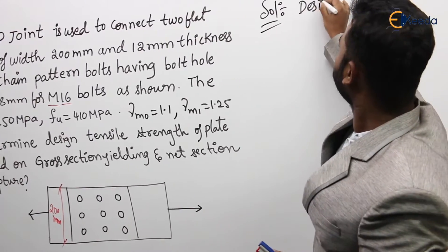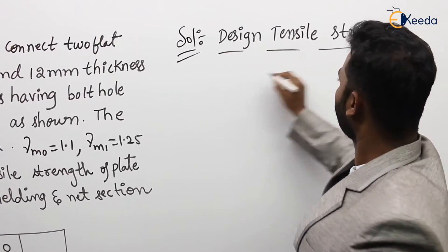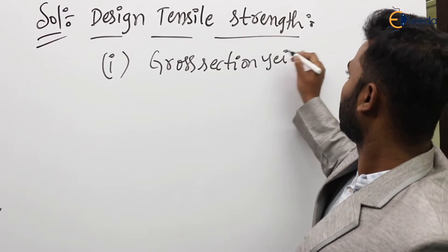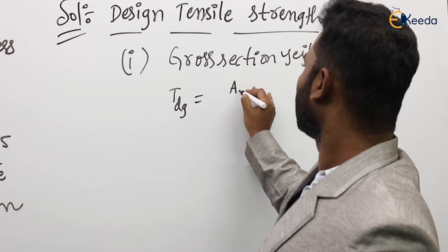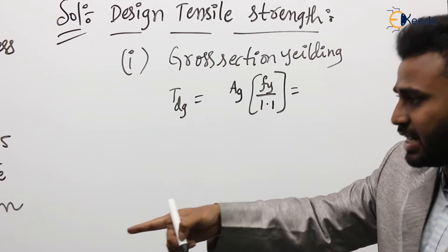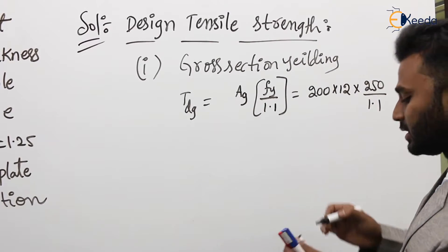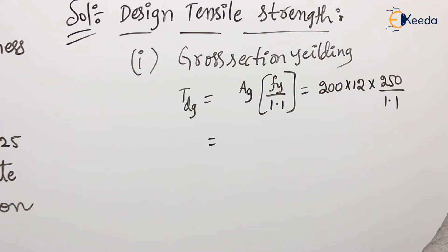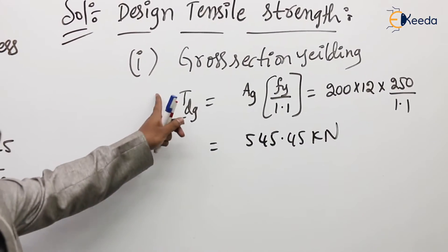For design tensile strength, the first criterion is gross section yielding. The design tensile strength in gross section yielding TDG equals AG × fy / 1.1. The gross area AG is simply width × thickness = 200 × 12. So TDG = 200 × 12 × 250 / 1.1, which comes out to 545.45 kN.